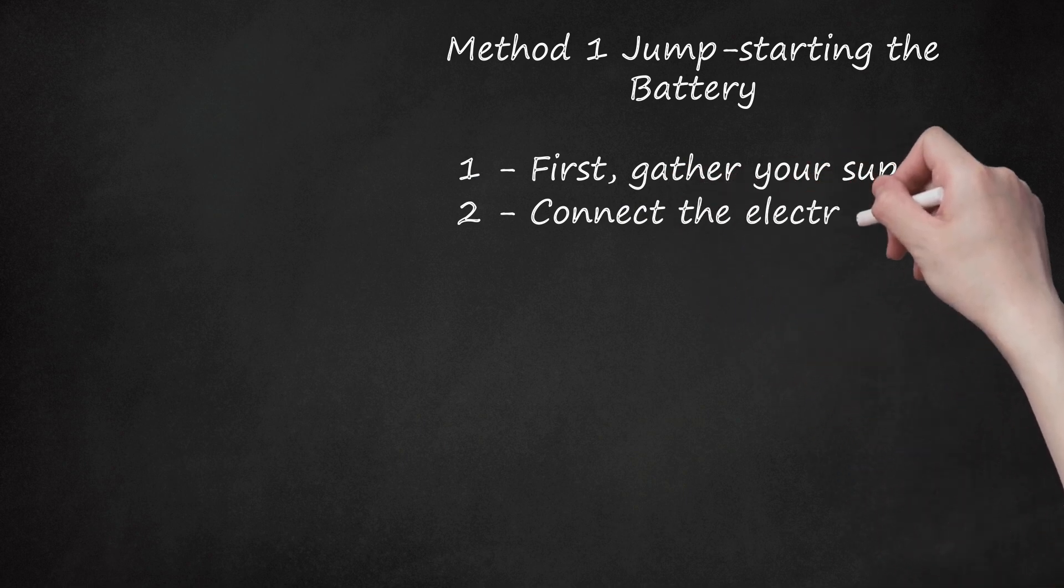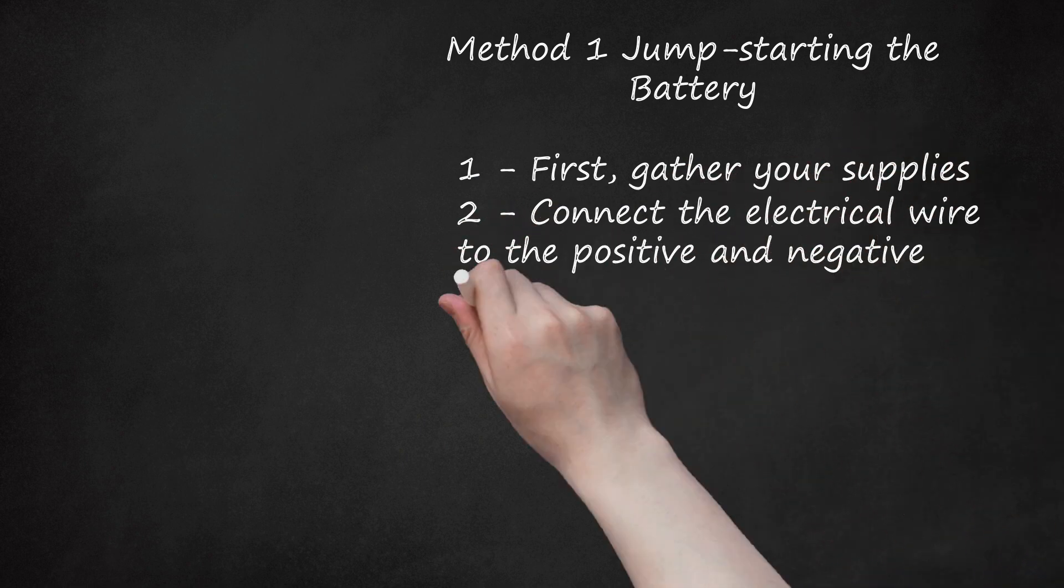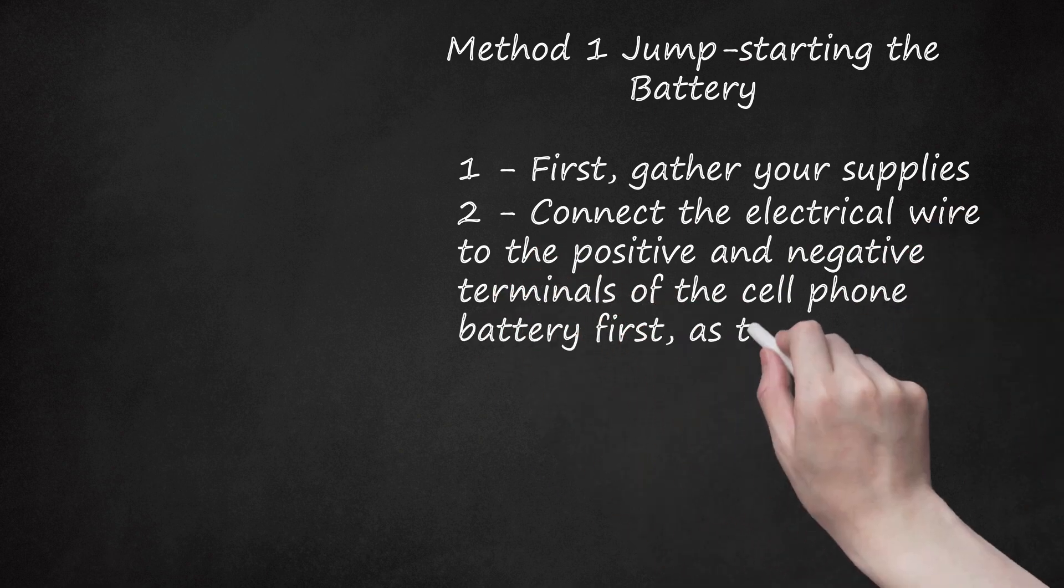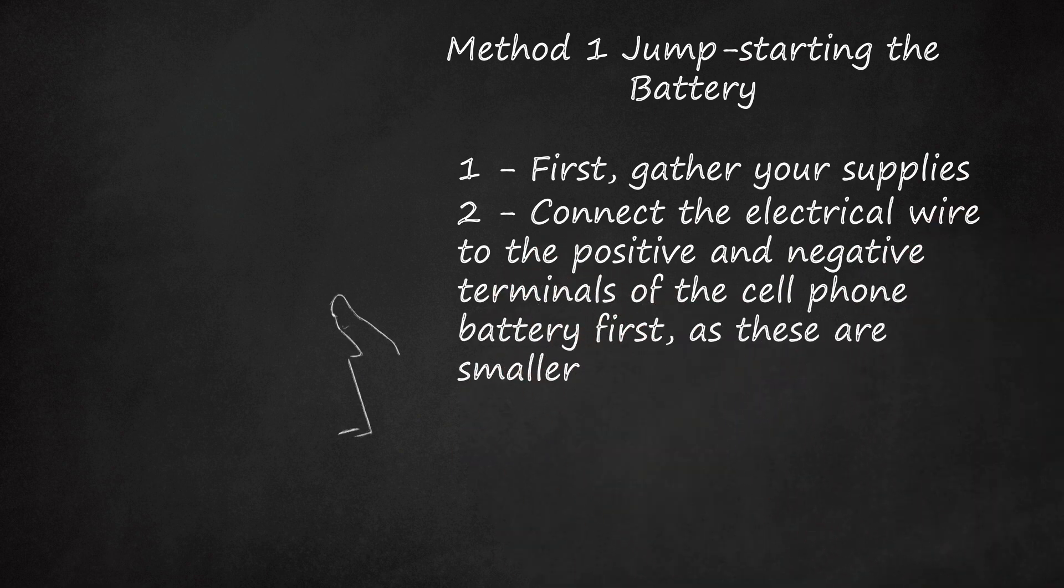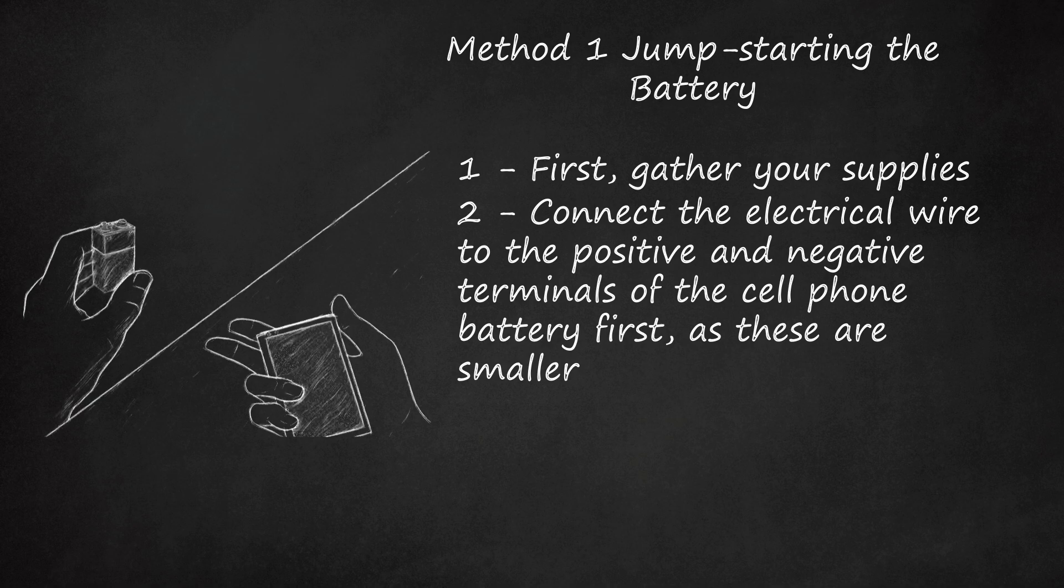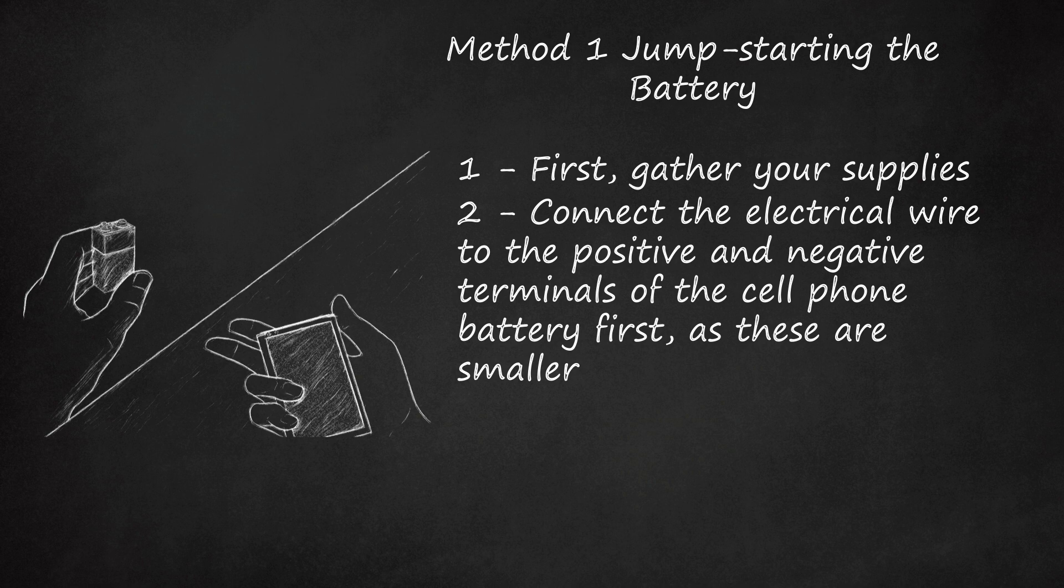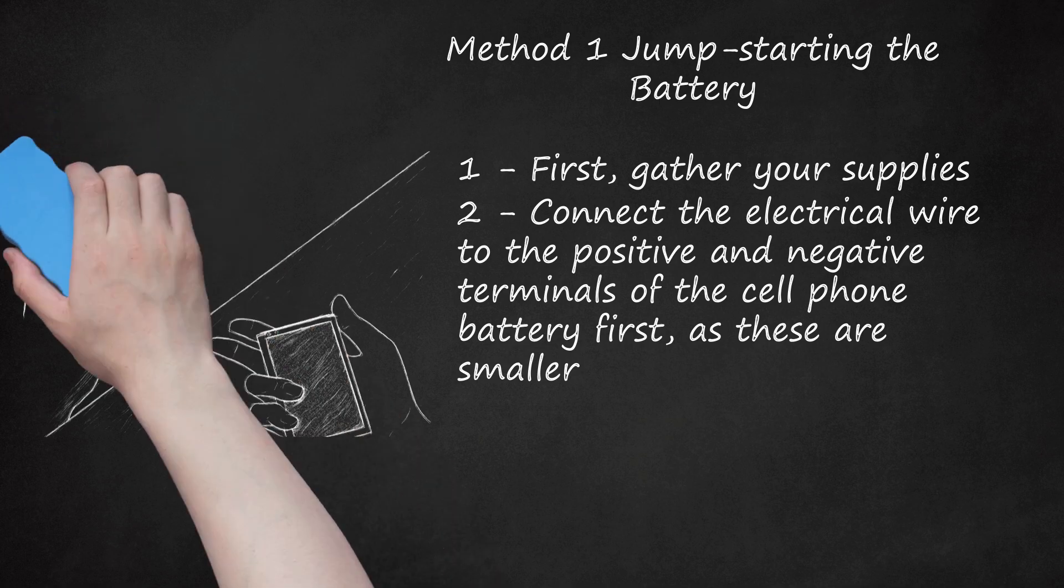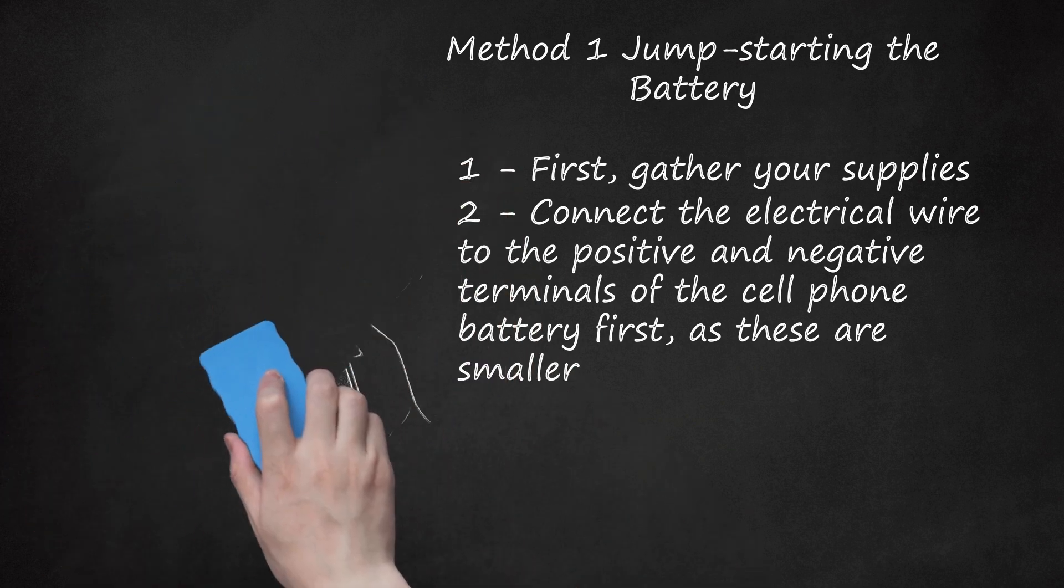Connect the electrical wire to the positive and negative terminals of the cell phone battery first, as these are smaller. You can identify the terminals of the battery by simply looking at the side of the battery. It will have a plus and minus sign to mark the terminals. Remember to use two separate wires or split wires for each of the terminals. Do not connect the positive and negative terminals of either battery with itself. Most cell phone batteries have more than two terminals. Use the ones that are furthest from each other, or the ones on the outside. The center terminals are not to be used.